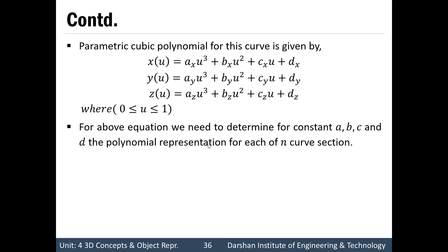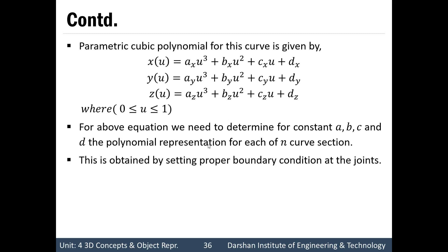For this equation we need to determine four constants a, b, c, and d for each of the n curve sections. Since we have n+1 control points, the total number of curve sections is n, and each curve section requires 4 constants. So the total number of constants to find is 4×n, that is 4n constants.